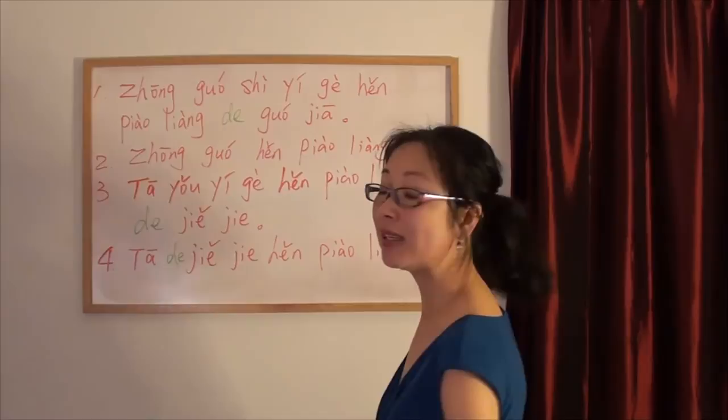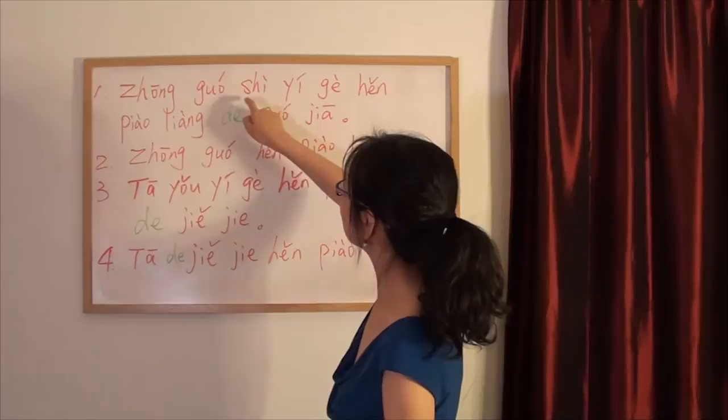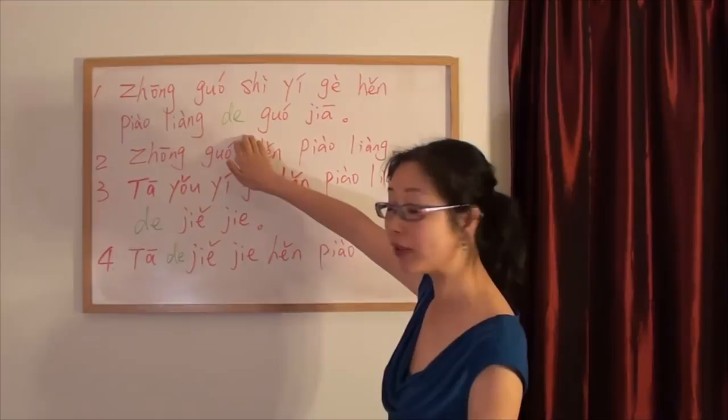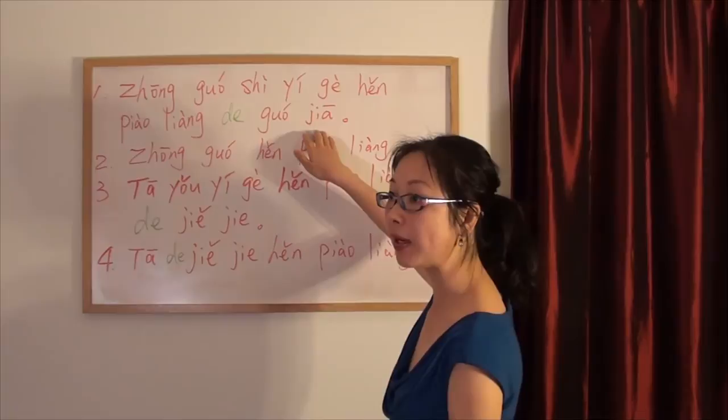I want you to remember this pattern is when you meet the subject plus verb plus adjective. Here's the adjective, right? And after adjective, it's not done. It's not the end of sentence. It's still something followed like the noun.